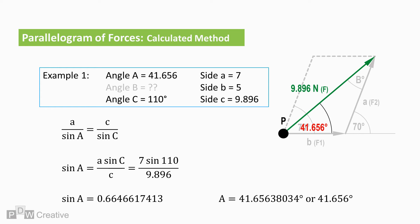So a total resultant force of 9.896 Newtons acts at an angle of 41.65 degrees to the point. The calculation checks out against the graphical method, giving the same force and angle of interaction.